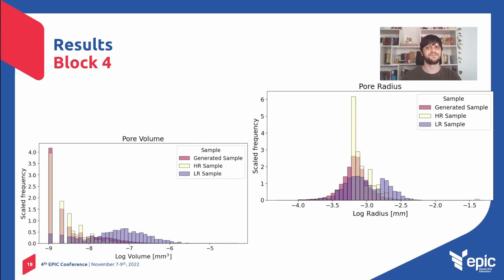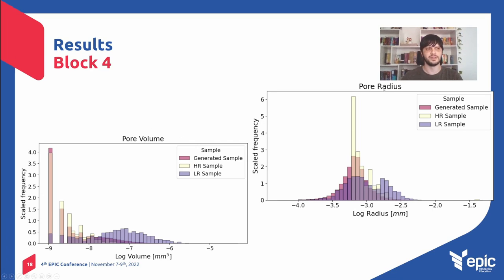One more slide for block four — the last one. These histograms are related to pore network modeling. The generated sample behaves similarly to the high resolution sample, with almost the same distribution for pore volume in comparison to the high resolution slice. For the pore radius, we can see almost the same distribution, though there is a difference in the highest bar. But besides that, the model respected this distribution.